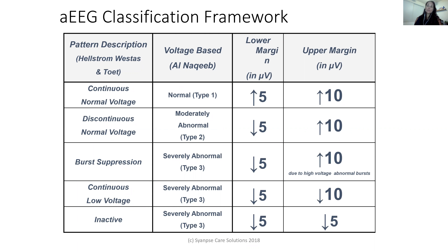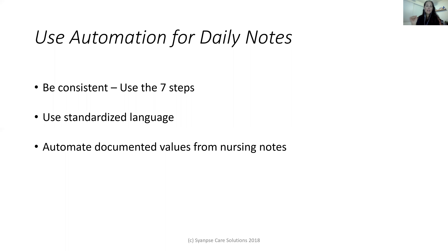You might also use the definitions of high discontinuous or low discontinuous — those are words used in other parts of the literature. Using consistent definitions and wording is helpful. Using actual voltage descriptions is best because that creates lack of ambiguity. Number three: automate documented values from the nursing notes. If you have a way to do that, you can actually pull that in and save time. If your nurses are documenting voltages, that's really a time saver.